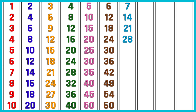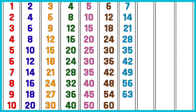7 fours are 28. 7 fives are 35. 7 sixes are 42. 7 sevens are 49. 7 eights are 56. 7 nines are 63. 7 tens are 70. Table of 8.